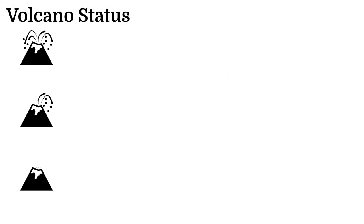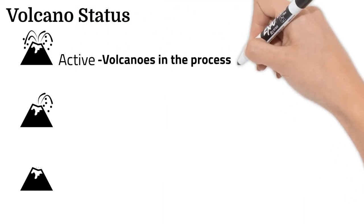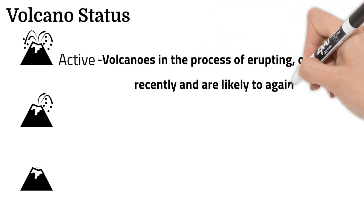There are three main categories of volcanoes used to convey their status. Active volcanoes are those in the process of erupting, or those that have recently erupted and are likely to erupt again.